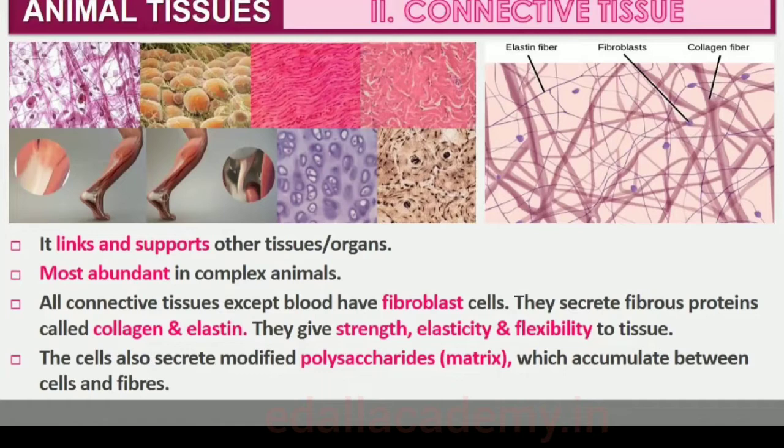In all connective tissues except blood, the cells secrete fibers of structural proteins called collagen or elastin. The fibers provide strength, elasticity and flexibility to the tissue. These cells also secrete modified polysaccharides, which accumulate between cells and fibers and act as matrix or ground substance.